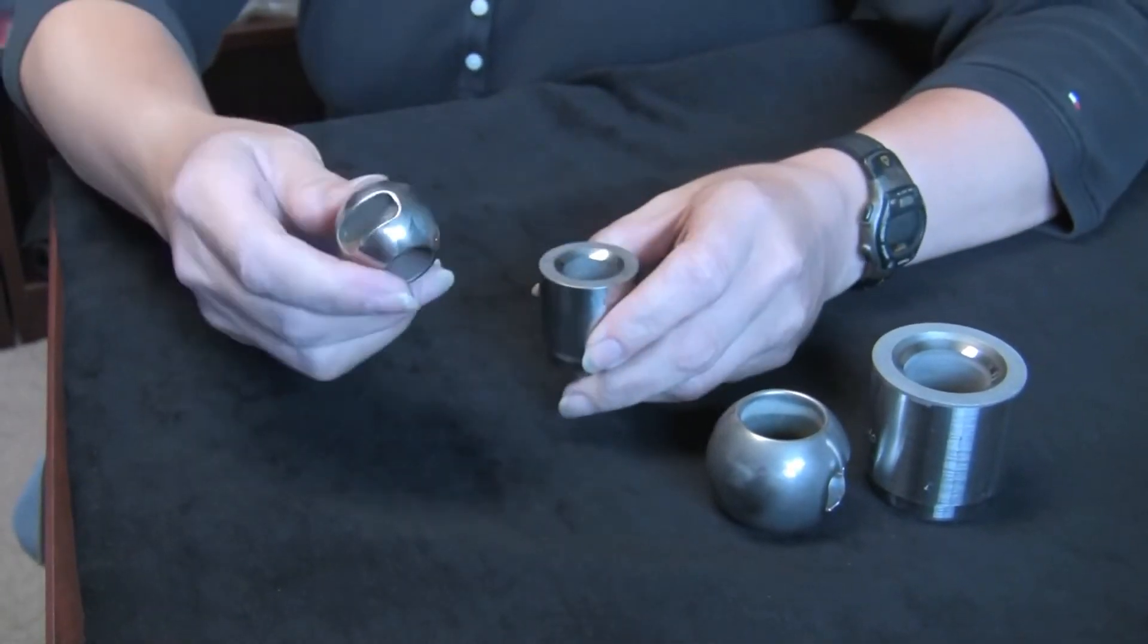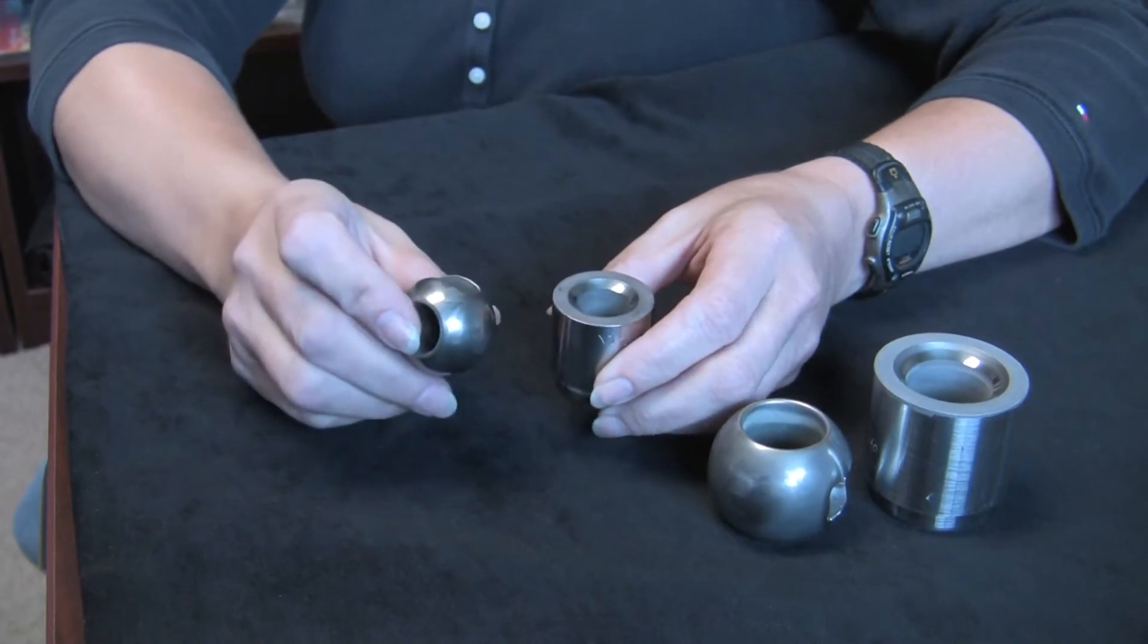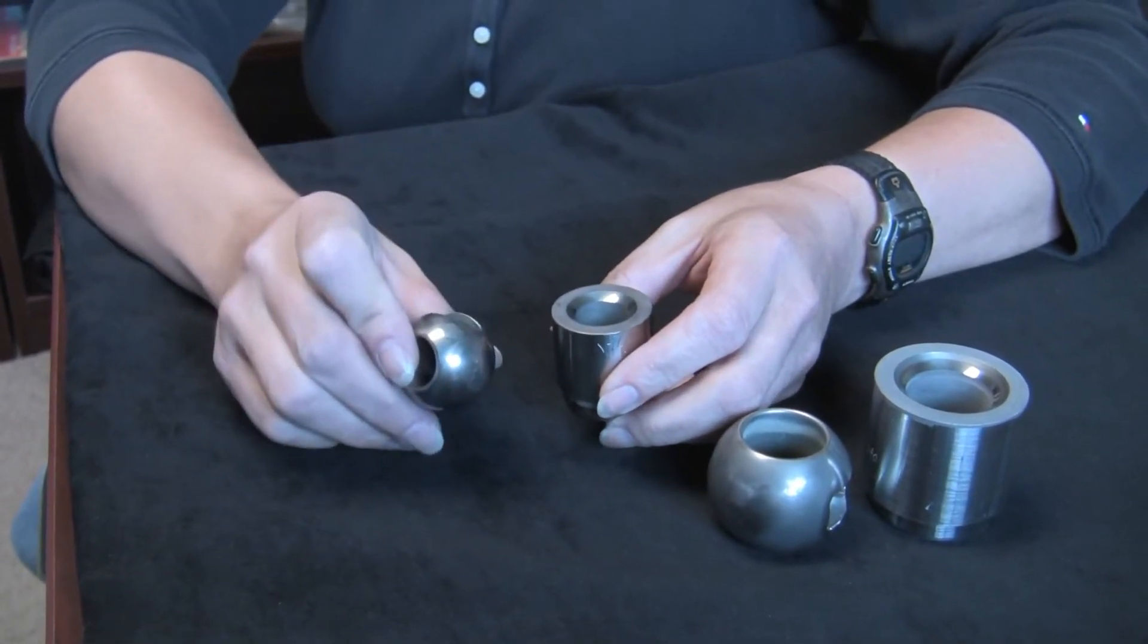This is an RSVP UC and this is the field check that we use to see if you have a positive seal between the ball and seat.